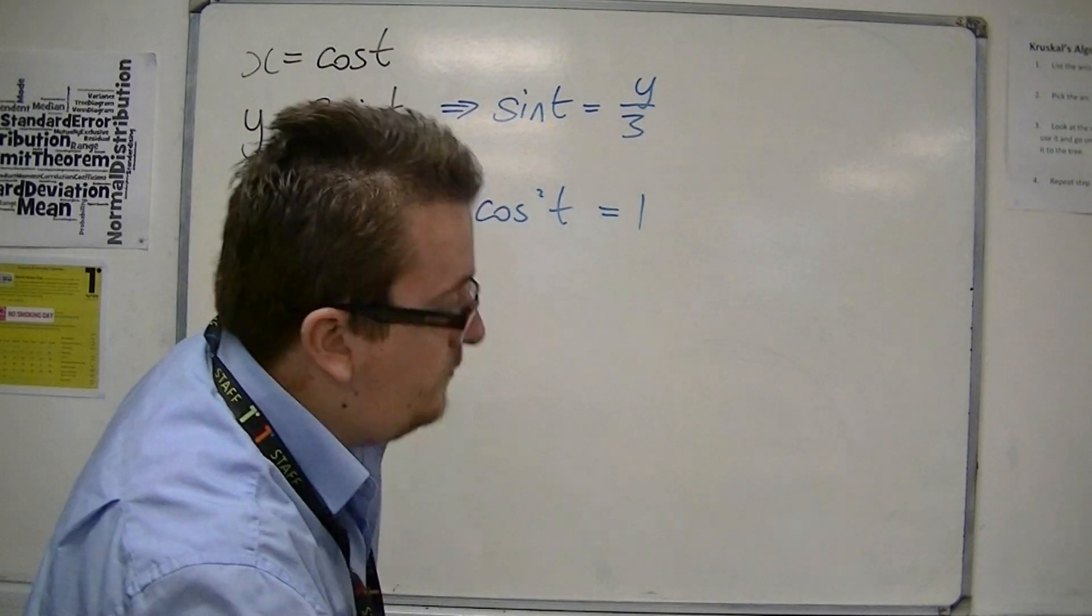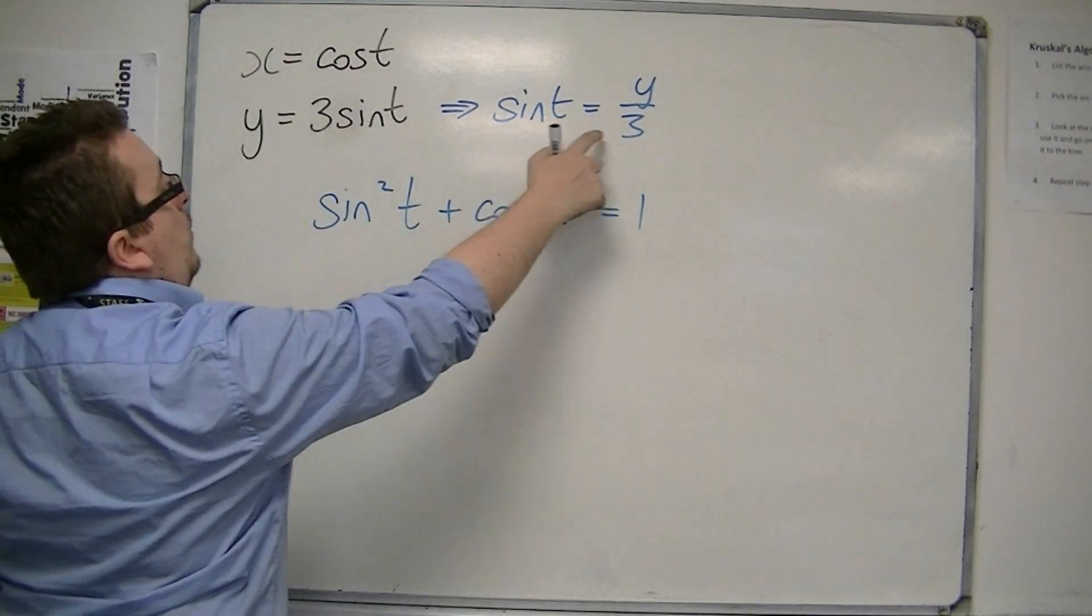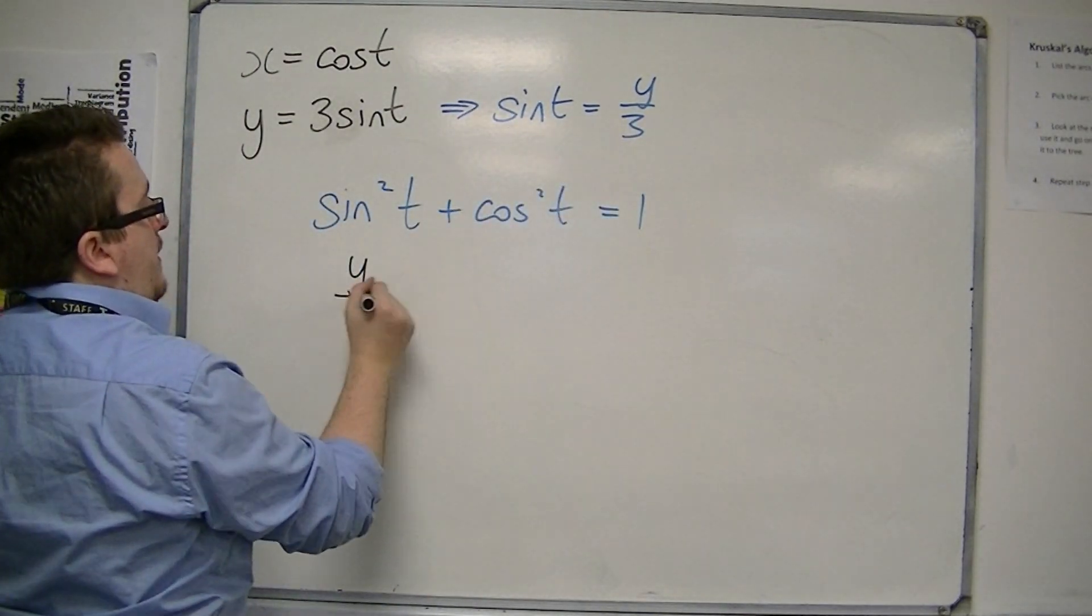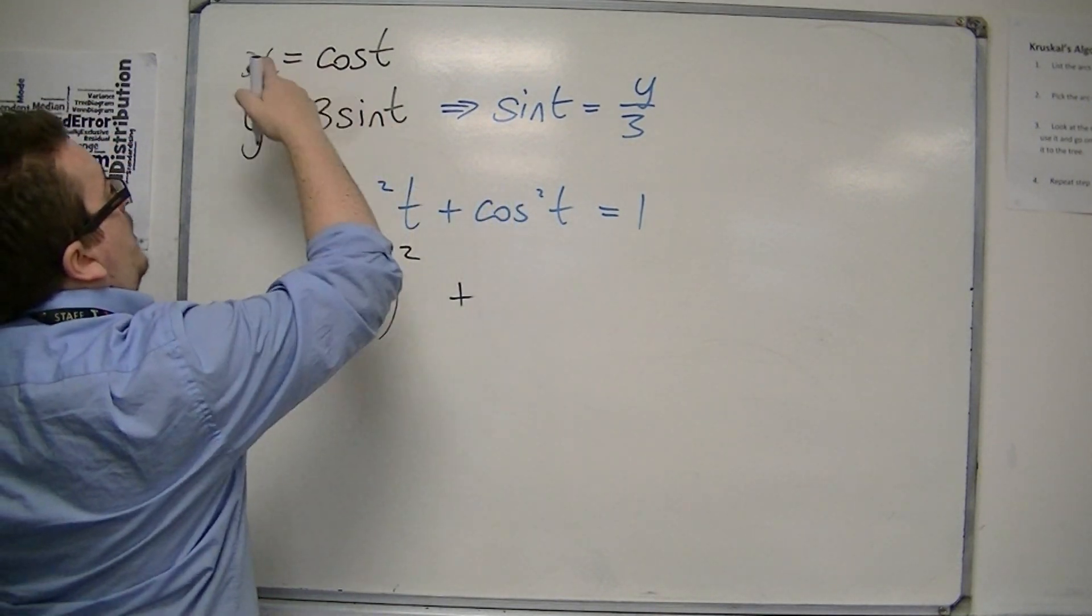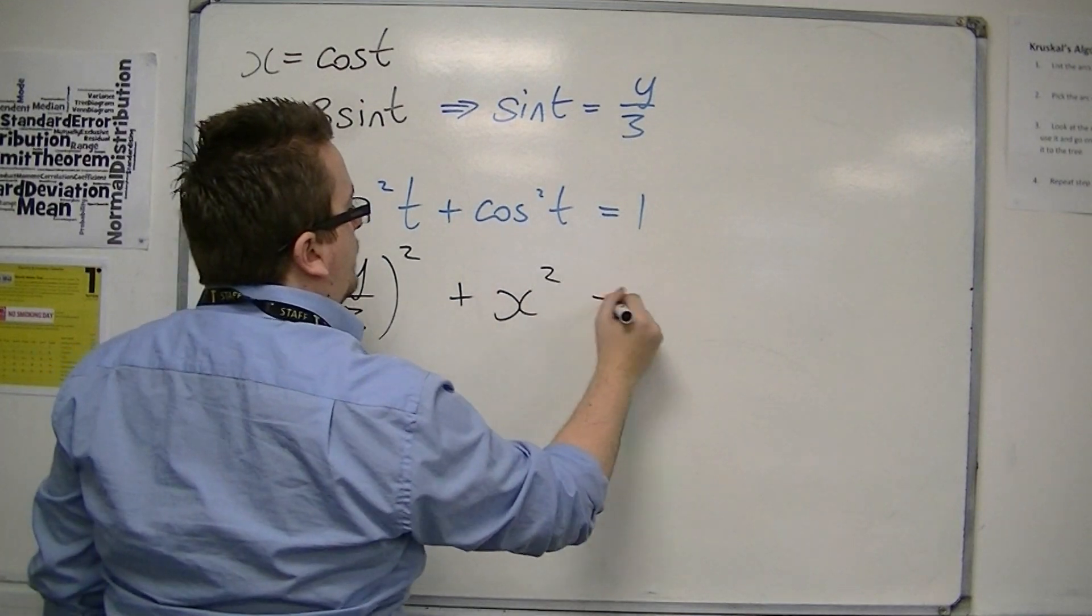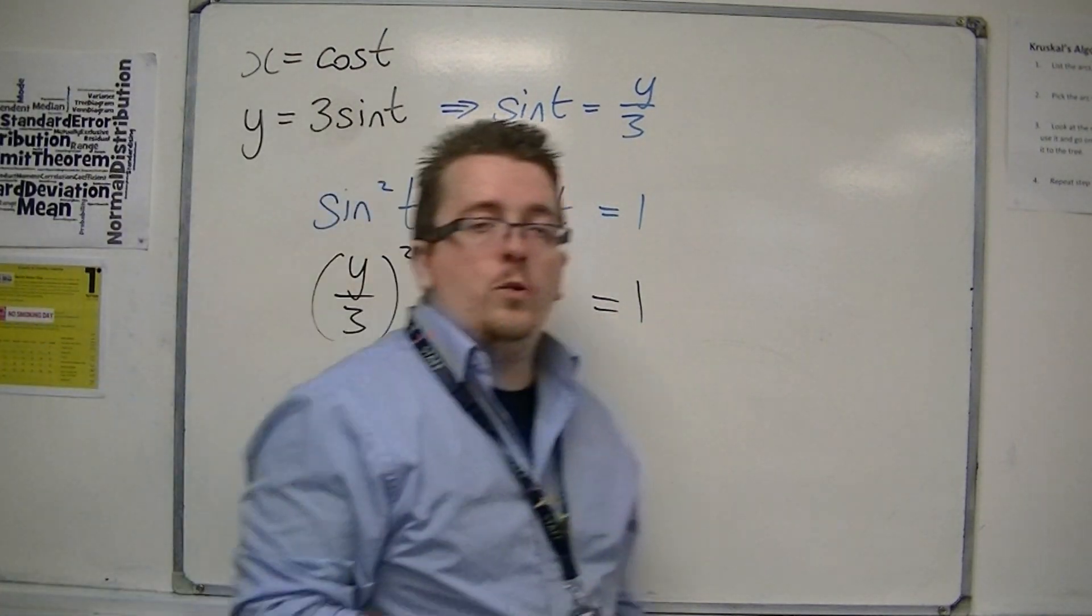If I replace the sine squared with y over 3 squared, and the cosine squared with x squared, I now have a Cartesian equation.